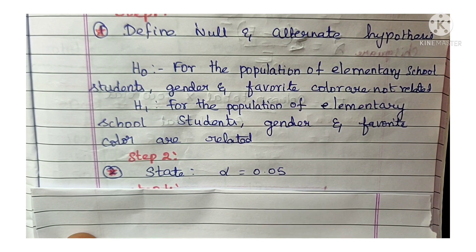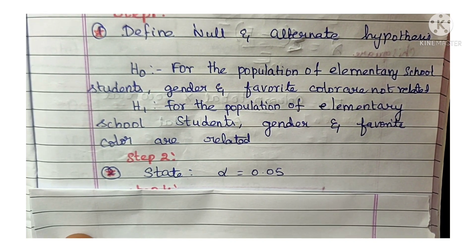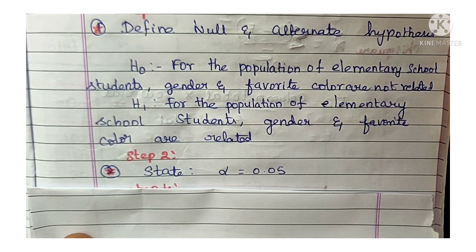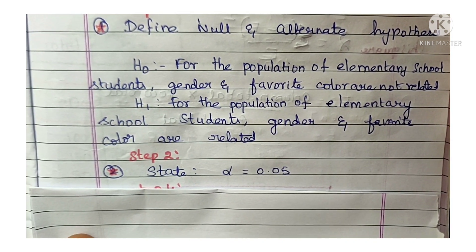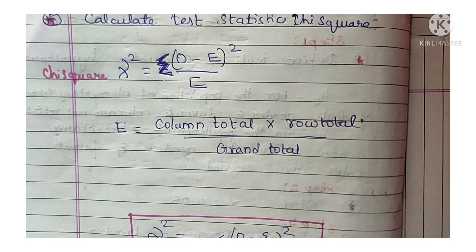In H0 you state they are not related, whereas in H1 you state they are related. Step 2 is to state alpha — the level of significance is 5%, that is 0.05. You then look up that value in the chi-square table.